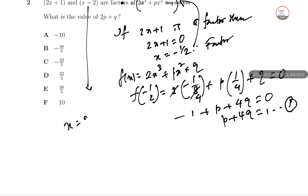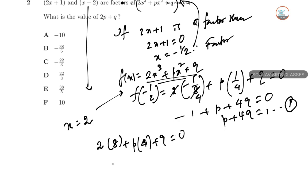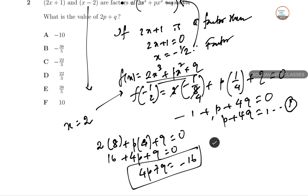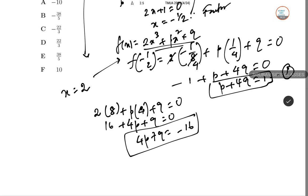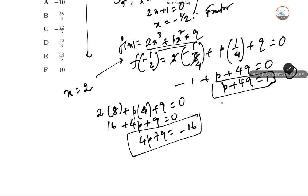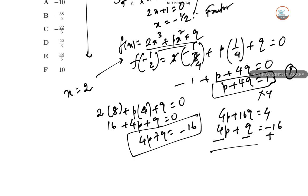Similarly, X minus 2 is a factor so X equals 2. Substituting X = 2: 2 times 8 equals 16, plus P times 4, plus Q times 2, plus the constant, equal to zero. This gives 16 plus 4P plus Q equal to minus 16, so 4P plus Q equal to minus 16. Now we have two equations: P plus 4Q = 1, and 4P plus Q = minus 16.